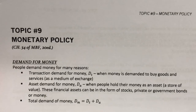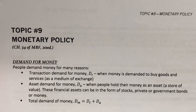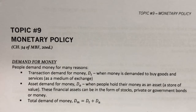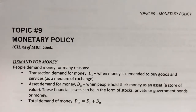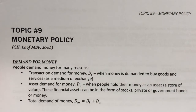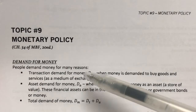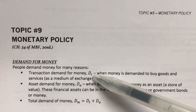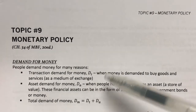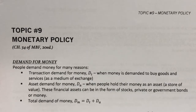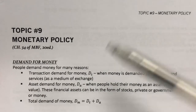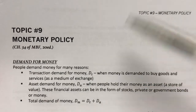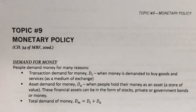Now that you know about the supply of money and how it looks like, let's continue our study on the money market by learning about the demand for money. People demand money for many reasons. The first is called the transaction demand for money, or DT. This happens when money is demanded to buy goods and services. One of the functions of money is as a medium of exchange, and that function is related to this particular demand for money.